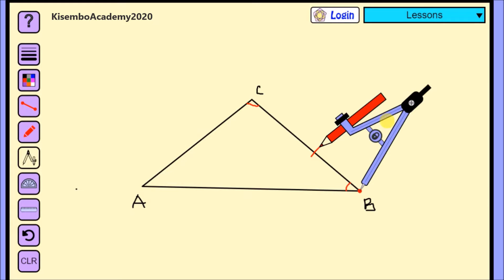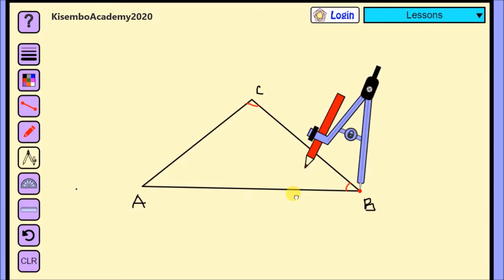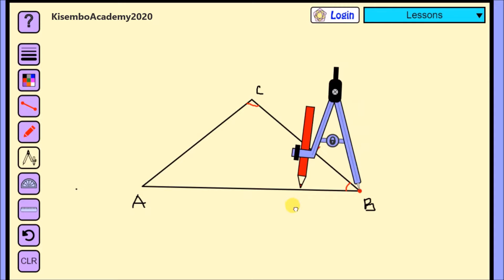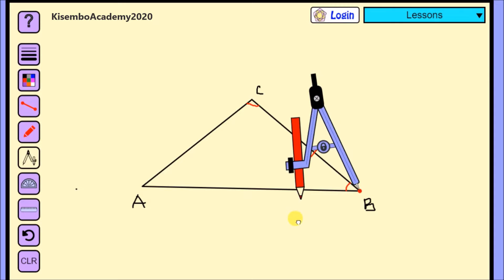We have this triangle ABC. Like I said, we are going to choose any two angles and bisect them. Let us choose angle ABC and also angle BCA. So what we are going to do here, I'm going to bisect angle ABC.